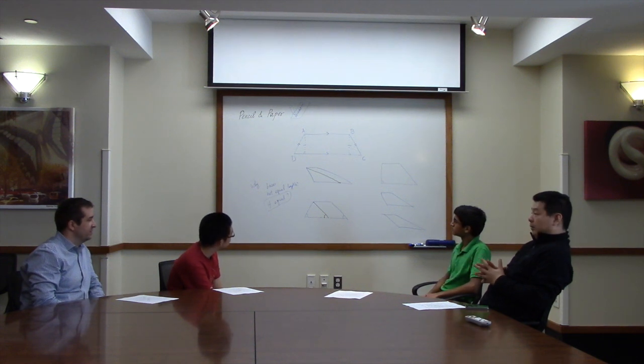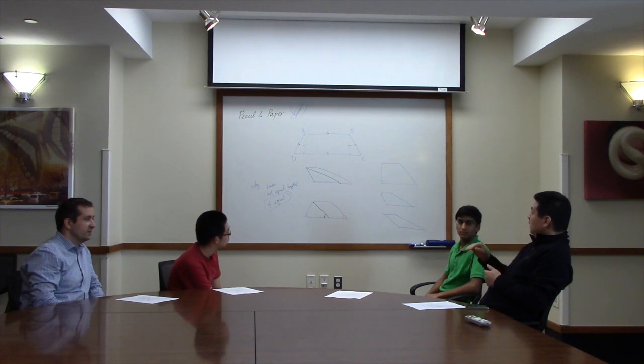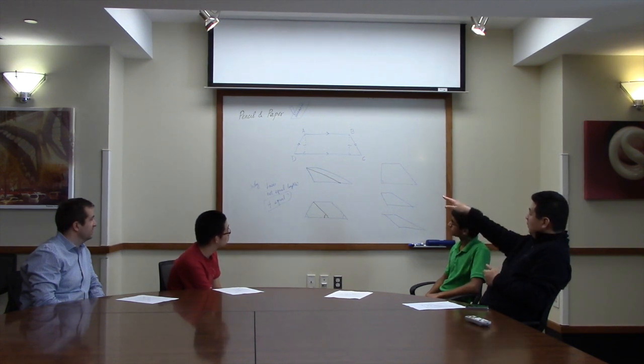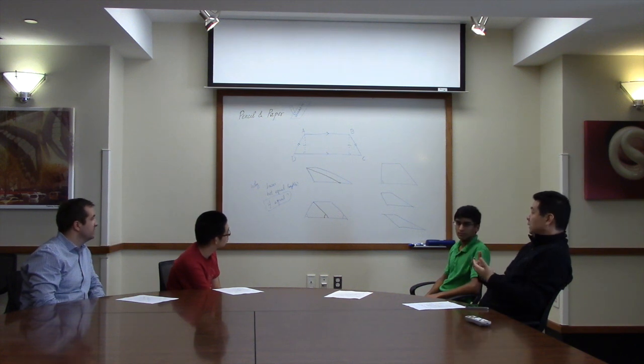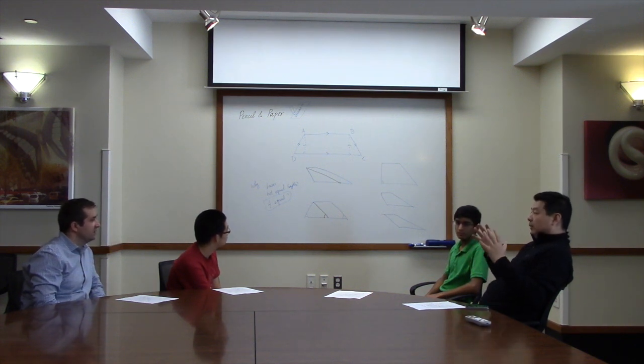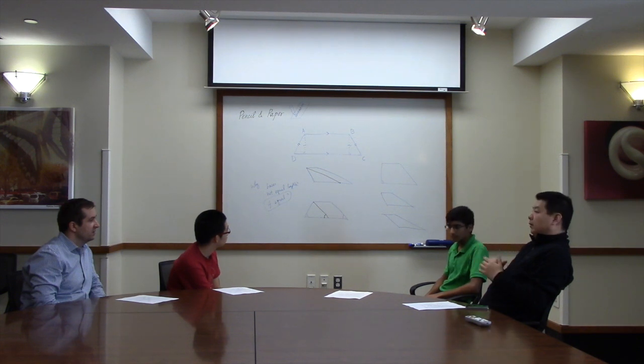So actually the more common proof, the real correct proof I think is actually rather than cut a trapezoid into a rectangle and two right triangles, as we normally envision a trapezoid, a trapezoid is much better in cutting to a triangle and a parallelogram.